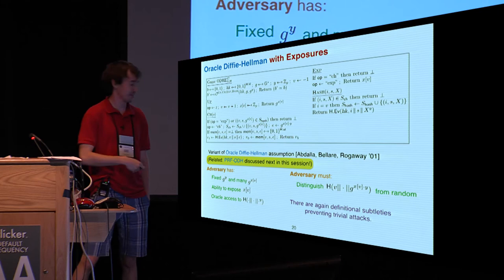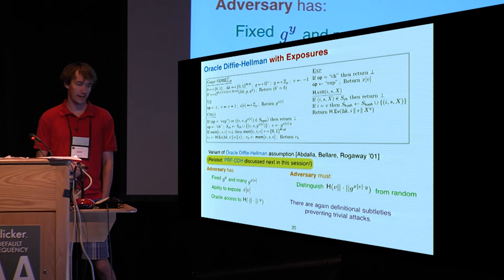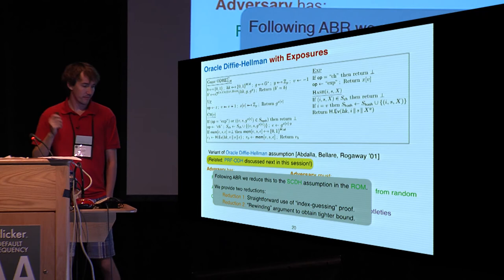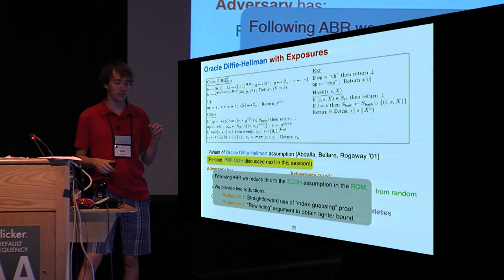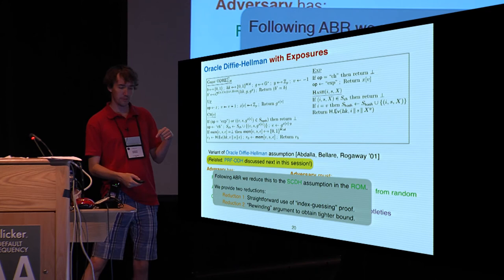As with the other two definitions, because of these exposures, there are various subtleties about trivial attacks we have to prevent. And we address those. And, as Abdalla, Bellare, and Rogaway did in their original work, we're able to show that this Oracle Diffie-Hellman with exposures can be reduced to the strong computational Diffie-Hellman assumption in the random oracle model.